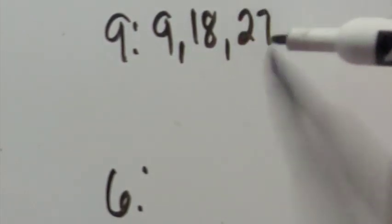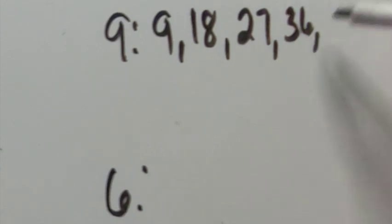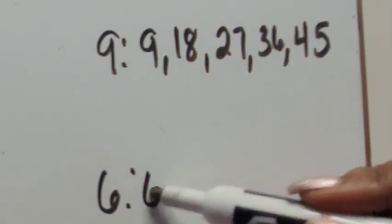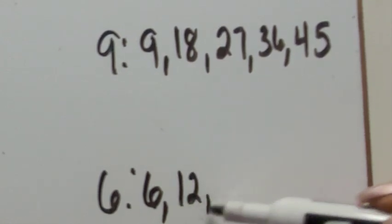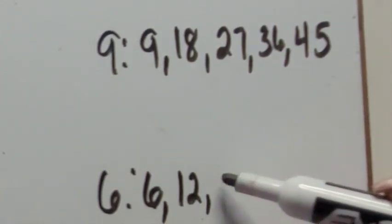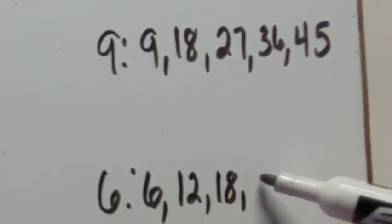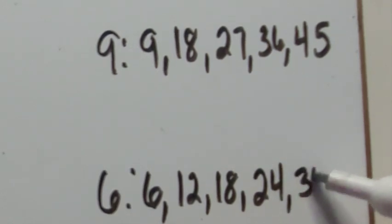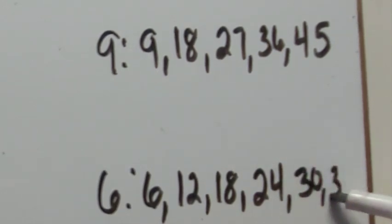Skip counting by nines to find the multiples: nine, eighteen, twenty-seven, thirty-six, forty-five. For six: six, twelve, eighteen, twenty-four, thirty, thirty-six.